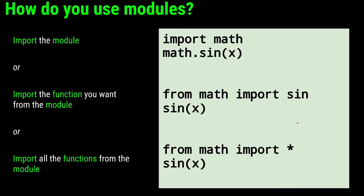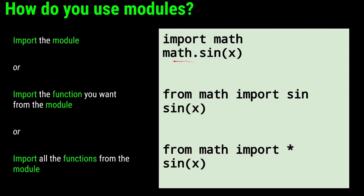So how do you use these modules? You're going to import the module — import has the same meaning as the English word: you're bringing it in from somewhere else. You can do `import math` and then use `math.sin(x)`, or you can import a specific function with `from math import sin` and then use `sin(x)`, or you can import everything from the module using a wildcard: `from math import *`, and then you don't have to use the `math.` prefix. We'll go through this in more detail.